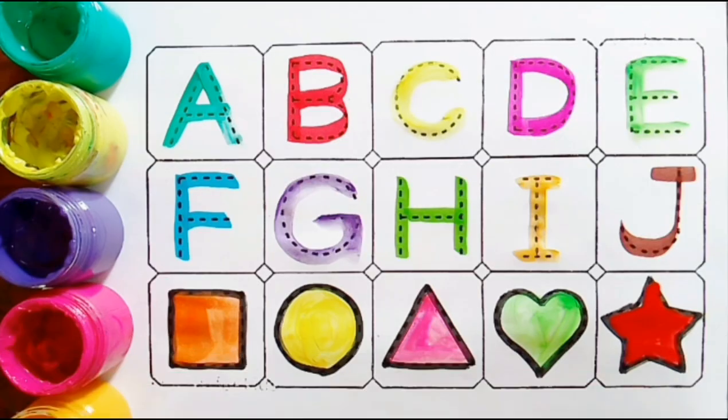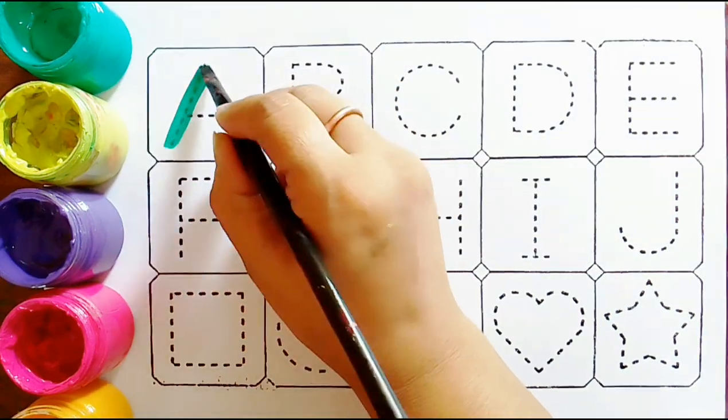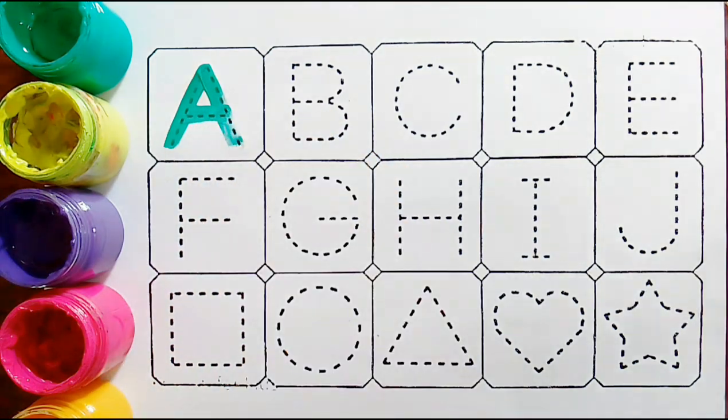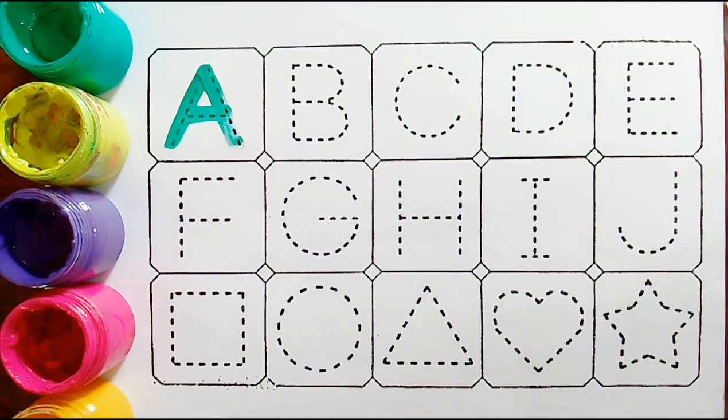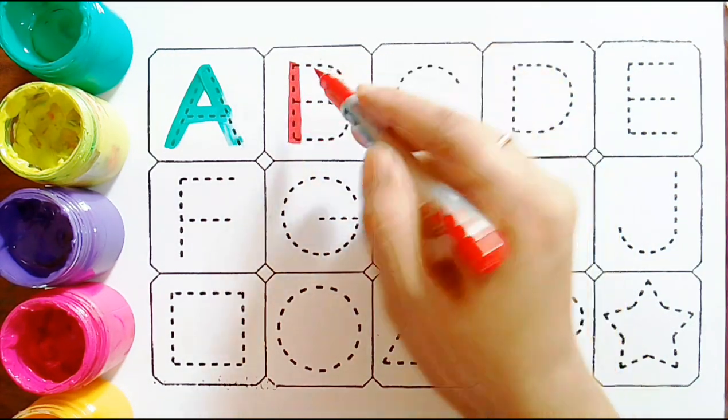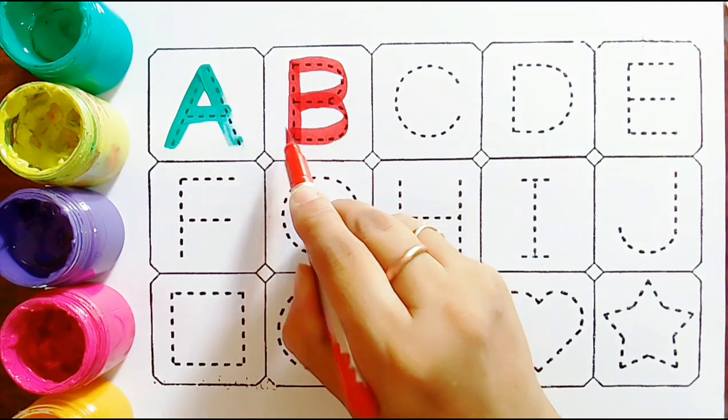Alphabets and shapes. Green color, A, A for apple. Red color, B, B for boy.